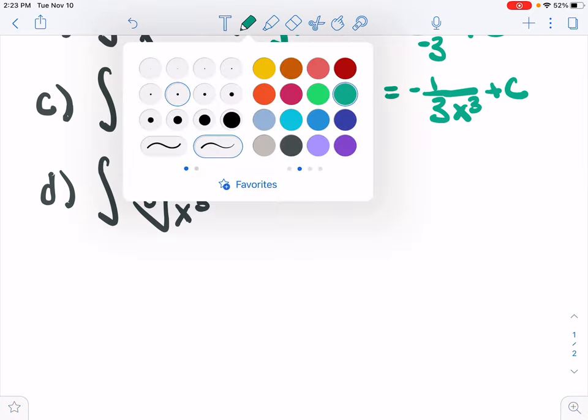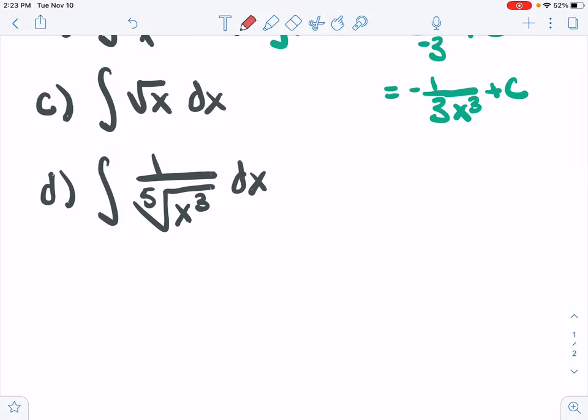The next one we have, let's scoot this down a little bit, the square root of x, the antiderivative. So that's the antiderivative of x to the 1 half, writing that as an exponent.